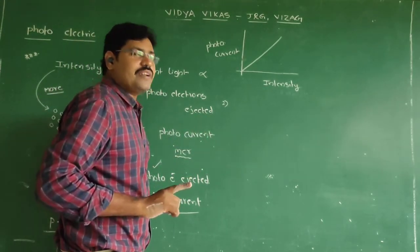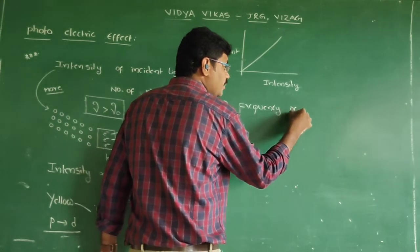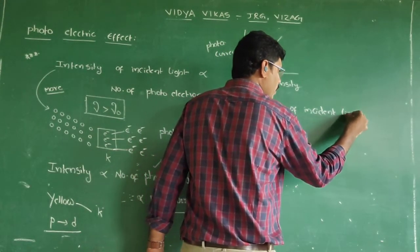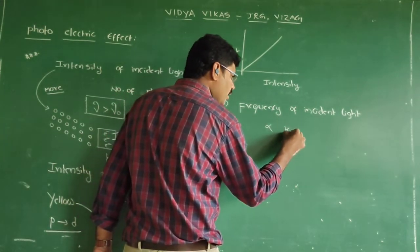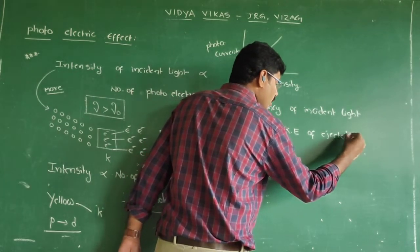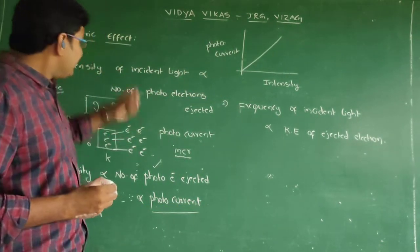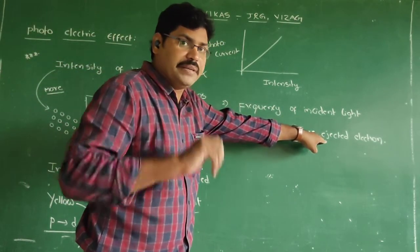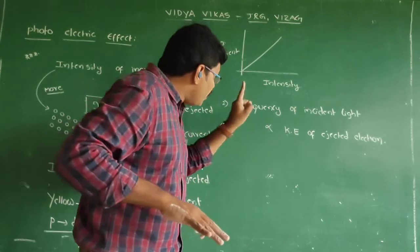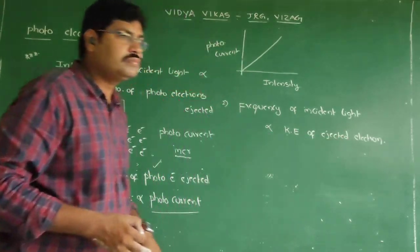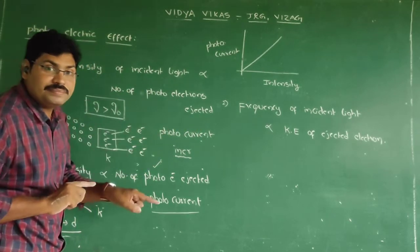Now let me come to the second factor which affects photoelectric effect: frequency of incident light. Frequency of incident light determines the kinetic energy of the ejected electron. Intensity never depends on kinetic energy of ejected electron - only frequency affects the kinetic energy of the ejected electron. Number of photoelectrons ejected depends upon intensity, but not frequency.